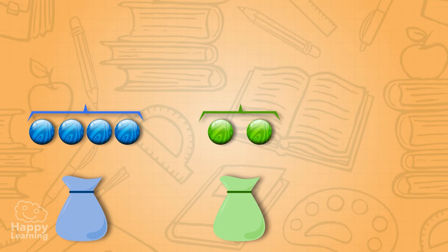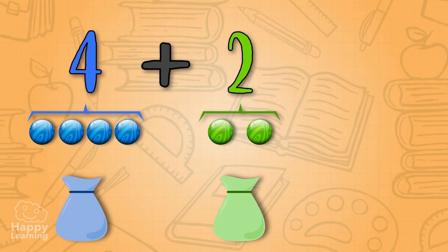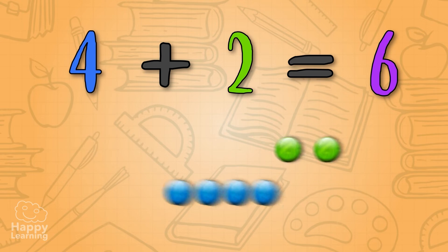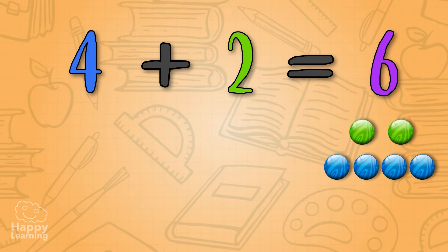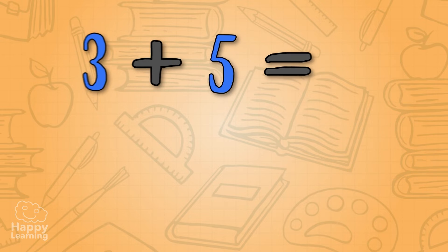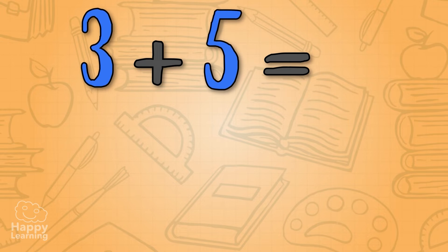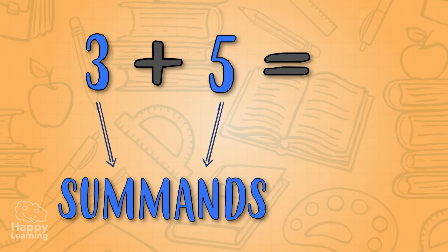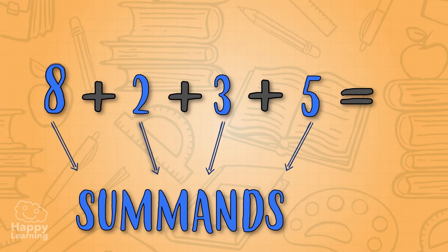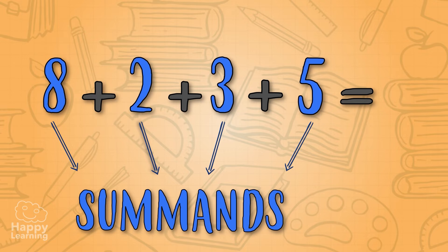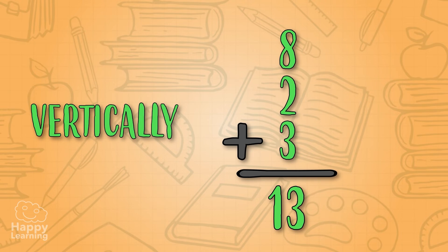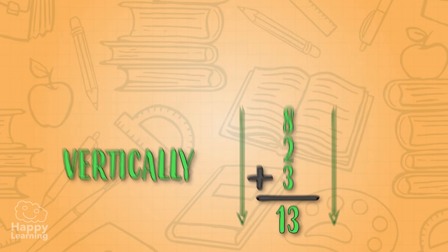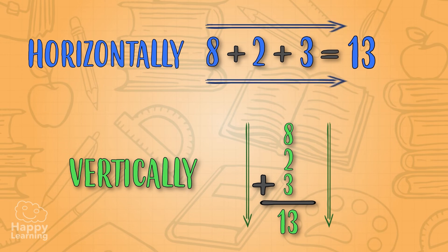If we add four blue marbles plus two green marbles, we write four plus two. That makes a total of six, so we know we have six marbles. Each one of the quantities that we add are called summands, and a simple addition can have as many summands as we wish.